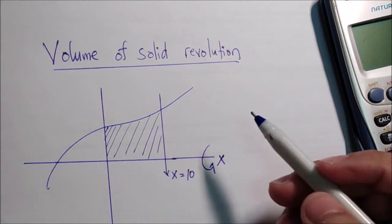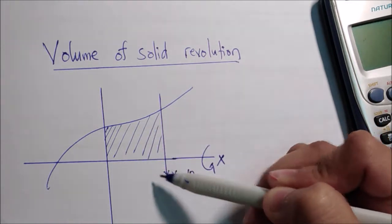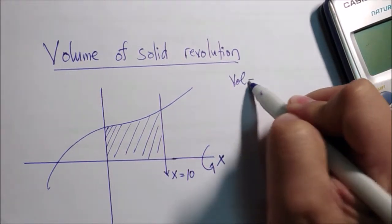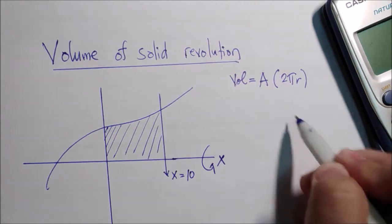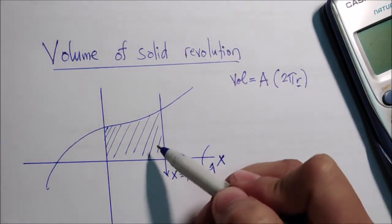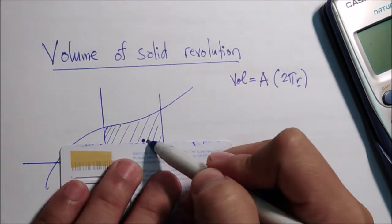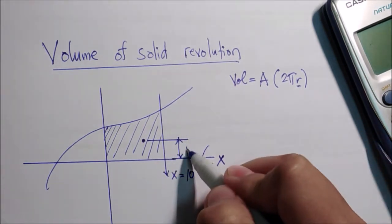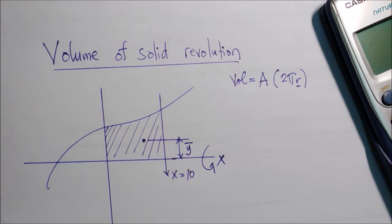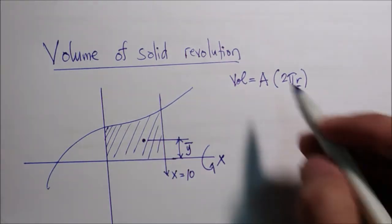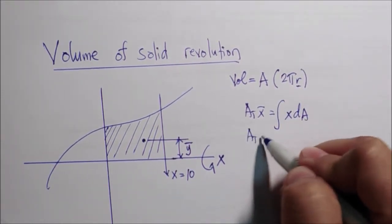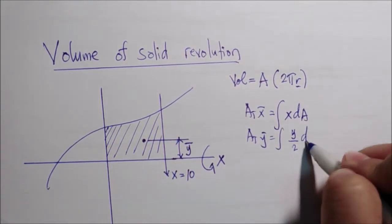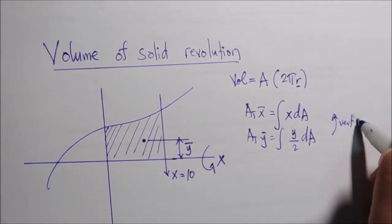So what will be the volume generated? Our formula is: volume equals the area multiplied by 2πr. This r — the radius — is the centroid, the location of the centroid from the axis of rotation, which we call bar-y. From a previous video we discussed how to calculate bar-y and bar-x of areas bounded by curves. That is: area total times bar-x equals the integral of x dA, and area total times bar-y equals the integral of y/2 dA.